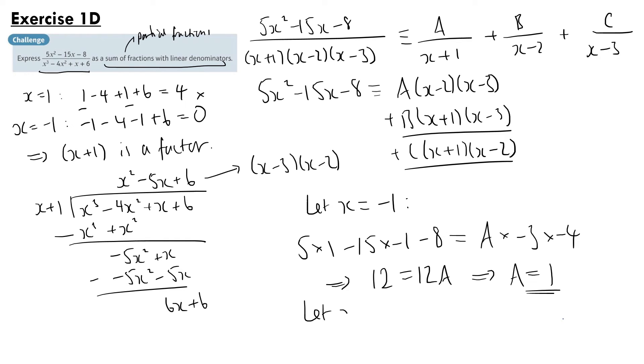If we let x equal 2, then we're just left with the b term. On the left hand side we have 5 times 2 squared, so that's 20, minus 15 times 2, which is 30, and minus 8. On the right hand side we have b times x plus 1, so that's 3, and x minus 3, which is minus 1. So we have minus 18 equals minus 3b, so b equals 6.